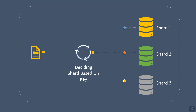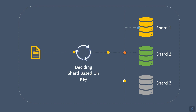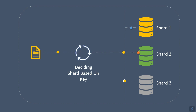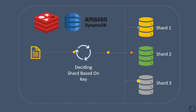Second, hash-based sharding applies a hash function to a key to determine the shard. This strategy provides a more even distribution of data. For example, Redis and DynamoDB databases use this type of sharding to partition data within a cluster.